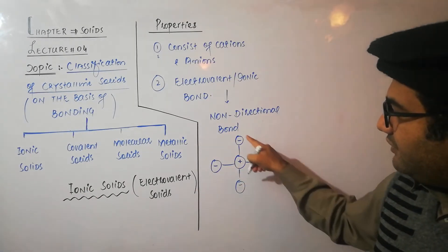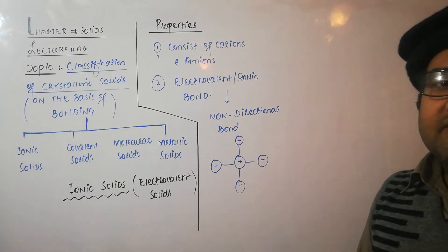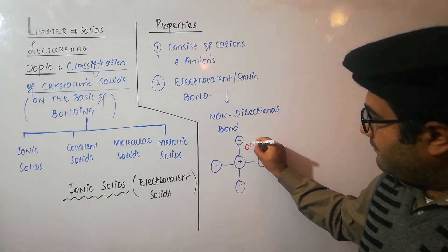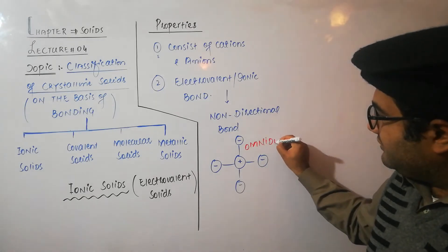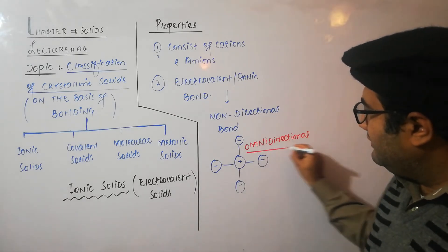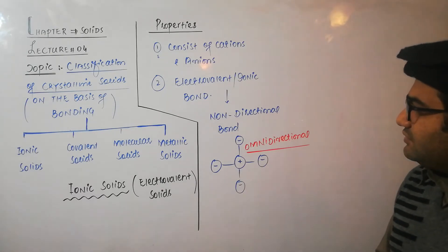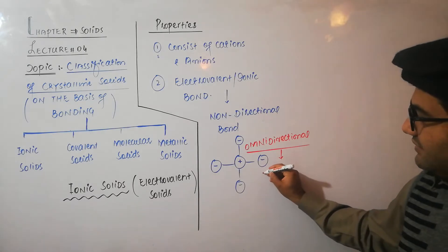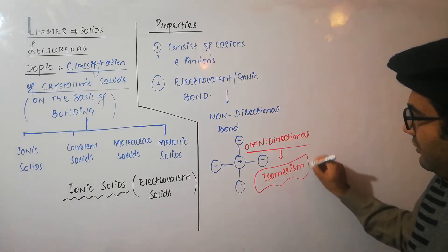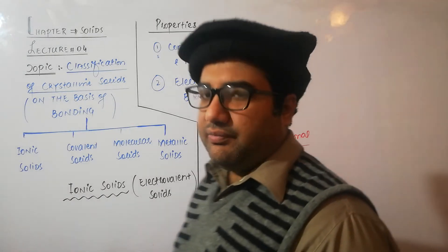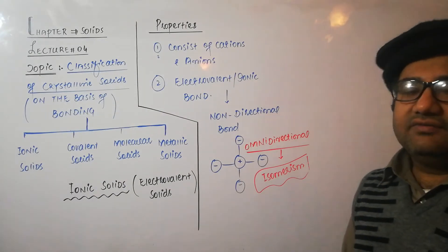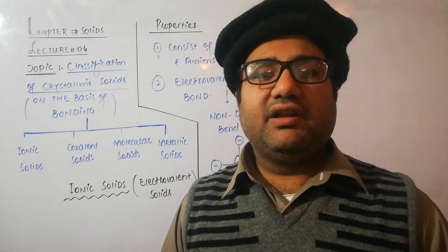Similarly, an anion is attracted by cations in all directions with equal strength. You may also call it omni-directional — in all directions with equal strength. Because the ionic bond is non-directional or omni-directional, ionic solids never show the phenomenon of isomerism. In order to show isomerism, the bond must be directional. Covalent bonds are directional, so covalent compounds show isomerism — but isomerism is not a property of ionic solids.